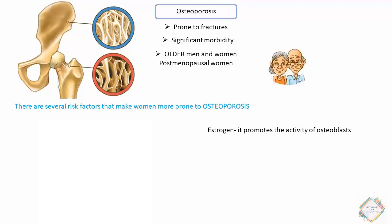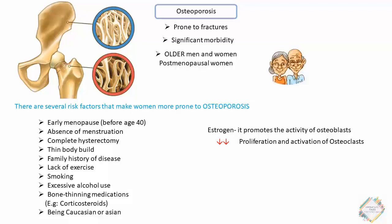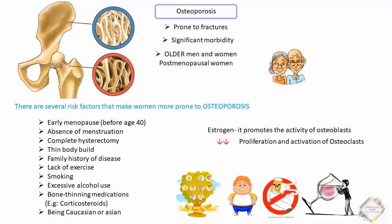In post-menopausal women, estrogen deficiency reduces osteoblast activity while simultaneously causing proliferation and activation of osteoclasts, which are responsible for bone resorption — i.e., breakdown of bone. Risk factors making women more prone to osteoporosis include early menopause before age 40, absence of menstruation, complete hysterectomy, thin body build, family history of disease, lack of exercise, smoking, excessive alcohol use, and being of Caucasian or Asian race.